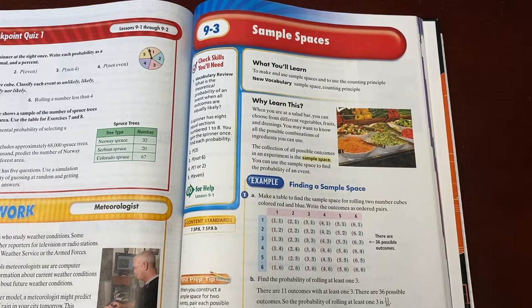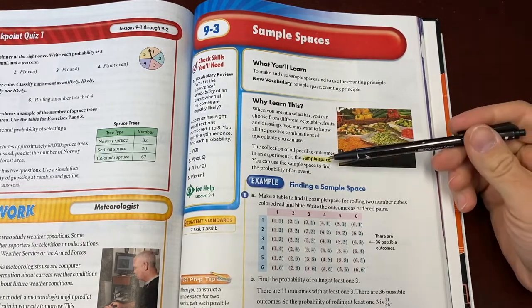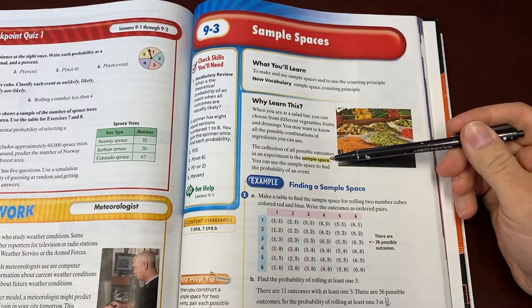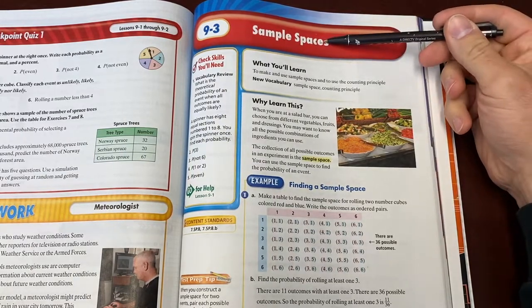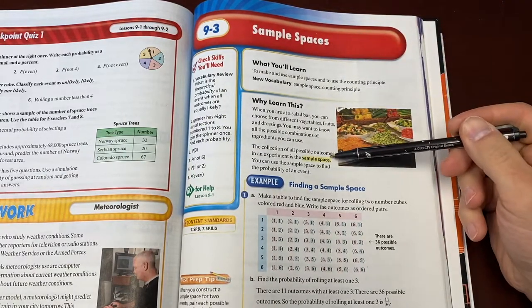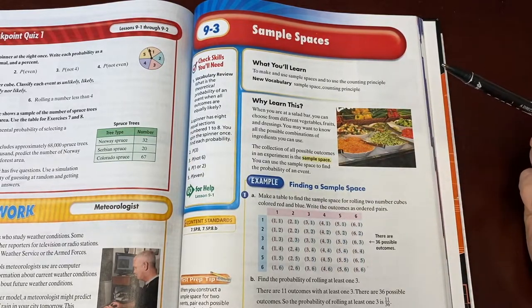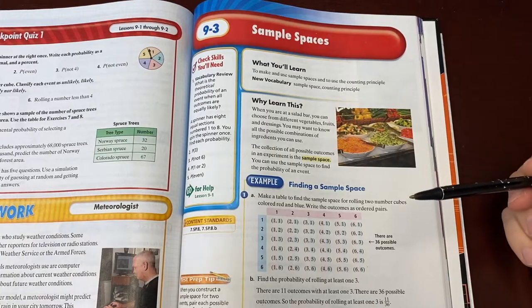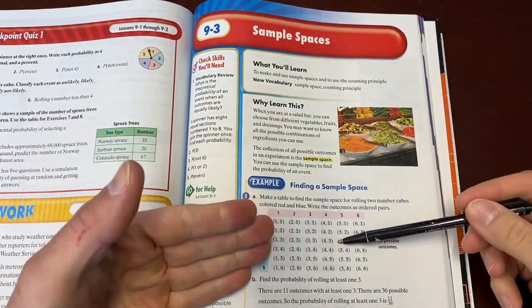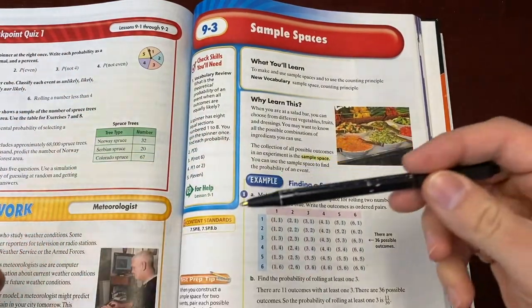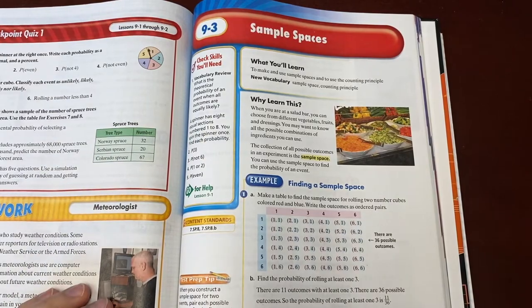I'll try and keep this certainly under 10 minutes and hopefully maybe closer to six or seven minutes. Sample space is the vocabulary word. It's also the title of the section. A sample space is just the list of possible outcomes. That's it. And you can make the lists in two ways. In a table, like we'll see on this page, or in a tree diagram like we'll see in the next page.